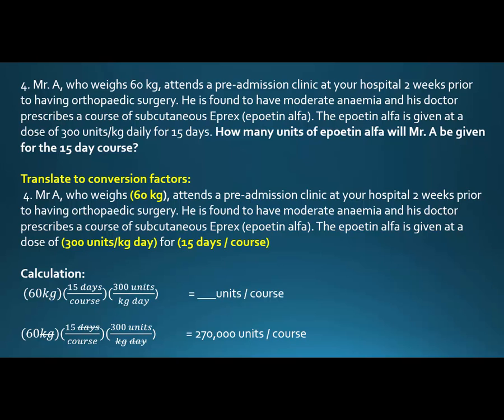So again, with weights, you generally don't make any change — you don't have a conversion, they usually stay singular. But we do have a couple of conversion factors: 300 units per kilogram per day, and then 15 days for the course.